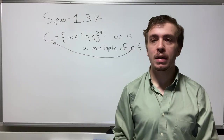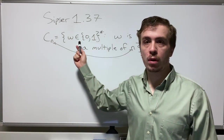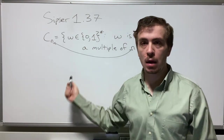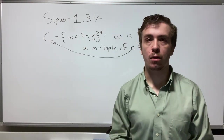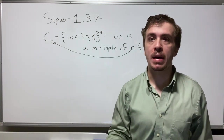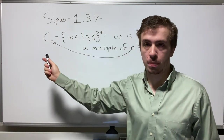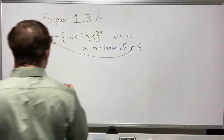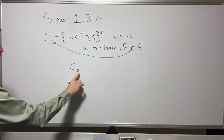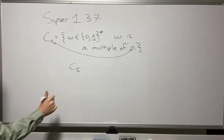We're going to be learning about constructing DFAs today. We're working with Sipser 1.37, solving a problem involving the language Cn — all binary numbers such that, looking at the binary representation of that number, it is a multiple of n.